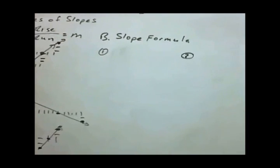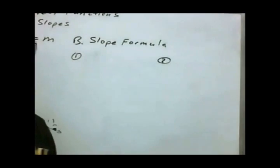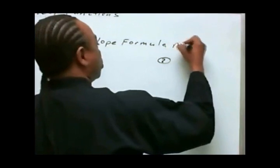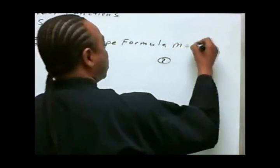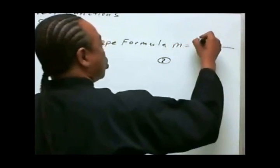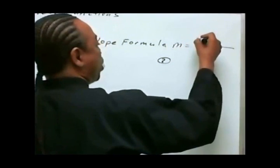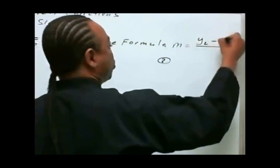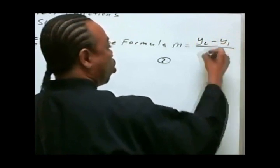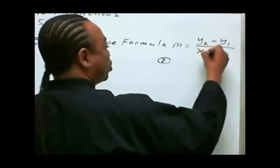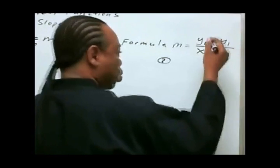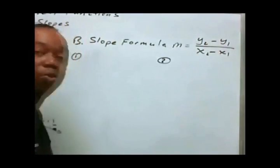How do we get slopes? There is a slope formula that we'll memorize. The slope formula says you need two points: take the difference of the y's over the difference of the x's, and this gives you rise over run.